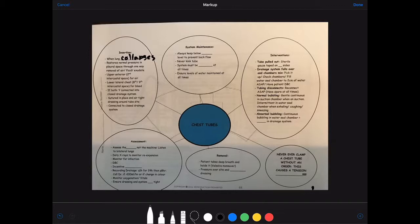The upper anterior second intercostal space would be for air, so this is where it would be placed because air rises. And the lower lateral chest, the eighth or ninth intercostal space, would be for blood as blood is in the base of the lungs. So if you have both in there, one for air and one that's farther down for blood, it would be connected by a Y—Y connected into a closed drainage system, and it would be sutured in place with an airtight dressing around the tube site connected to a closed drainage system.